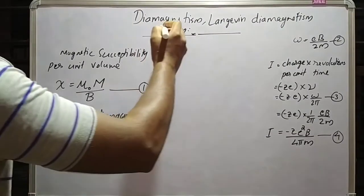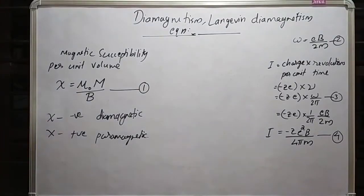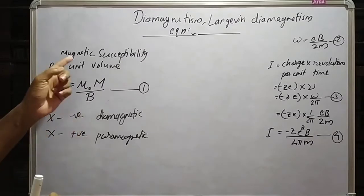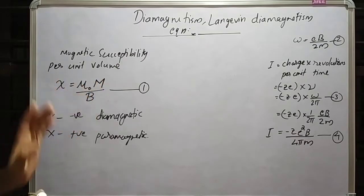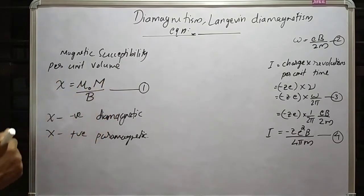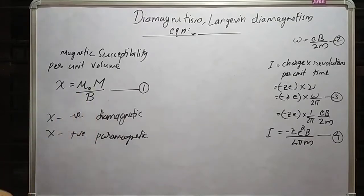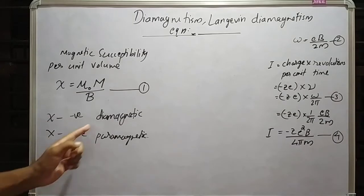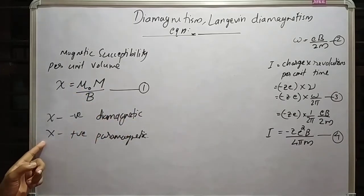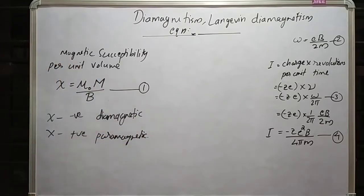Let us discuss diamagnetism and the Langevin diamagnetism equation. First, let me define magnetic susceptibility per unit volume. This is represented as chi equal to mu0 times M over B, where M is the magnetic moment per unit volume and B is the magnetic field intensity. Substances with negative susceptibility are known as diamagnetic substances, and substances with positive susceptibility are known as paramagnetic substances.